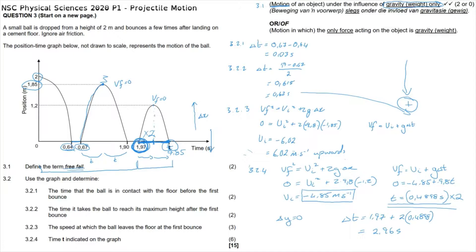Regarding how this question would be marked: definitions must be almost verbatim as given in the guidelines. For question 3.2.1, although the calculation is simple, it is worth two marks, meaning you must show a calculation and not just write the answer. Always pay attention to mark allocation as it indicates what is required.